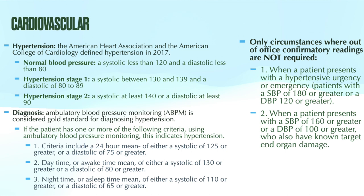You want to be familiar with how to diagnose and how to treat hypertension. We'll review the guidelines provided by the American Heart Association and the American College of Cardiology in 2017. They defined normal blood pressure as a systolic less than 120 and a diastolic less than 80. A systolic of 120 to 129 with a diastolic that remains less than 80 is considered elevated, but it is not classified as hypertension.